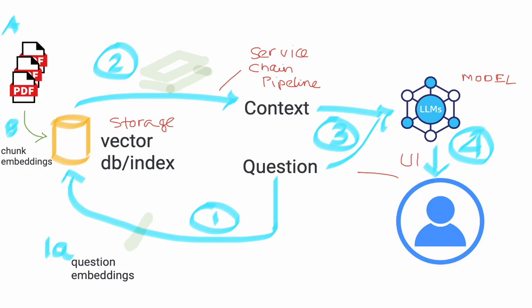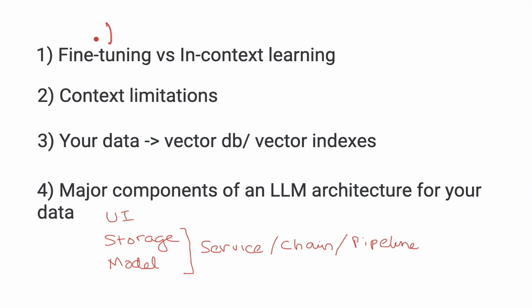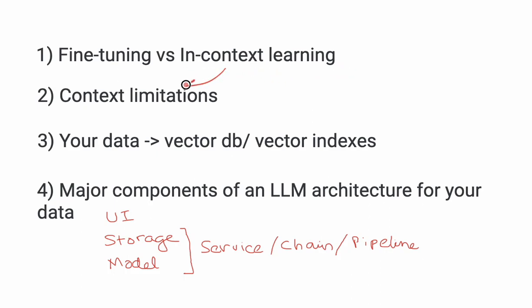Let's do a quick recap. We talked about two ways you could use your own data with LLMs: one is fine-tuning an existing model, which is cheaper but still pretty intensive, or the most popular one — in-context learning. When we talked about context learning, we discussed context limitations with tokens — you cannot add too many tokens into your prompt. The solution is to take your data, push it into a storage layer called a vector database or vector index, and create an architecture based on that.